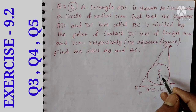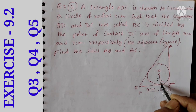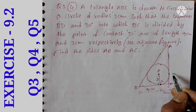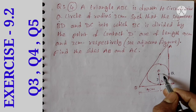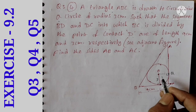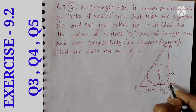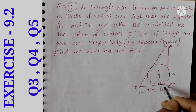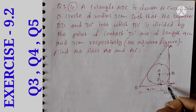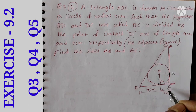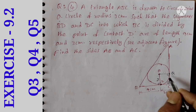The radius is always perpendicular to the tangent at the point of contact, so each angle at the contact point is 90 degrees. The radius is 3 cm. Since three sides are equal and all angles are 90 degrees, a square is formed at the contact region.